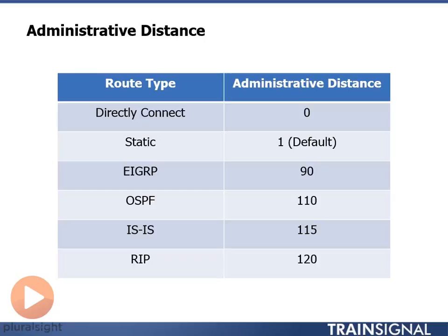So the administrative distance is our first line of defense when building the routing table to determine which route gets added to the table. The second one is the metric. The metric is going to determine the best path.